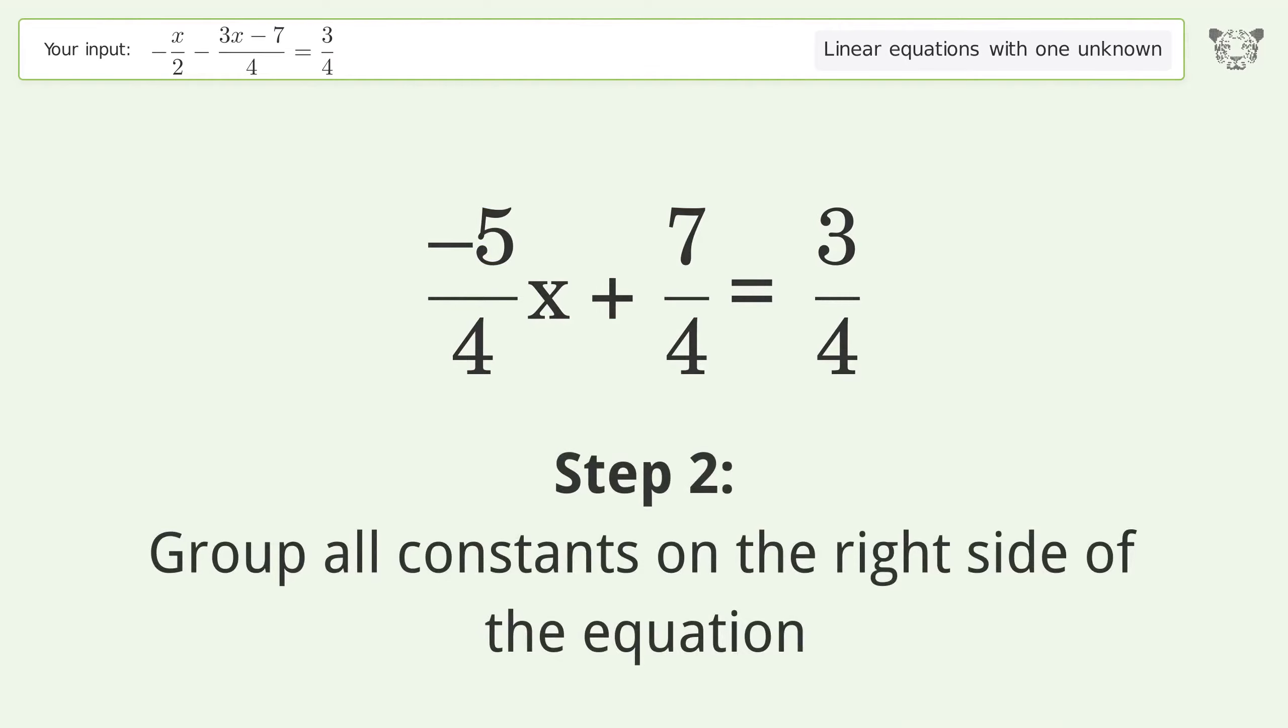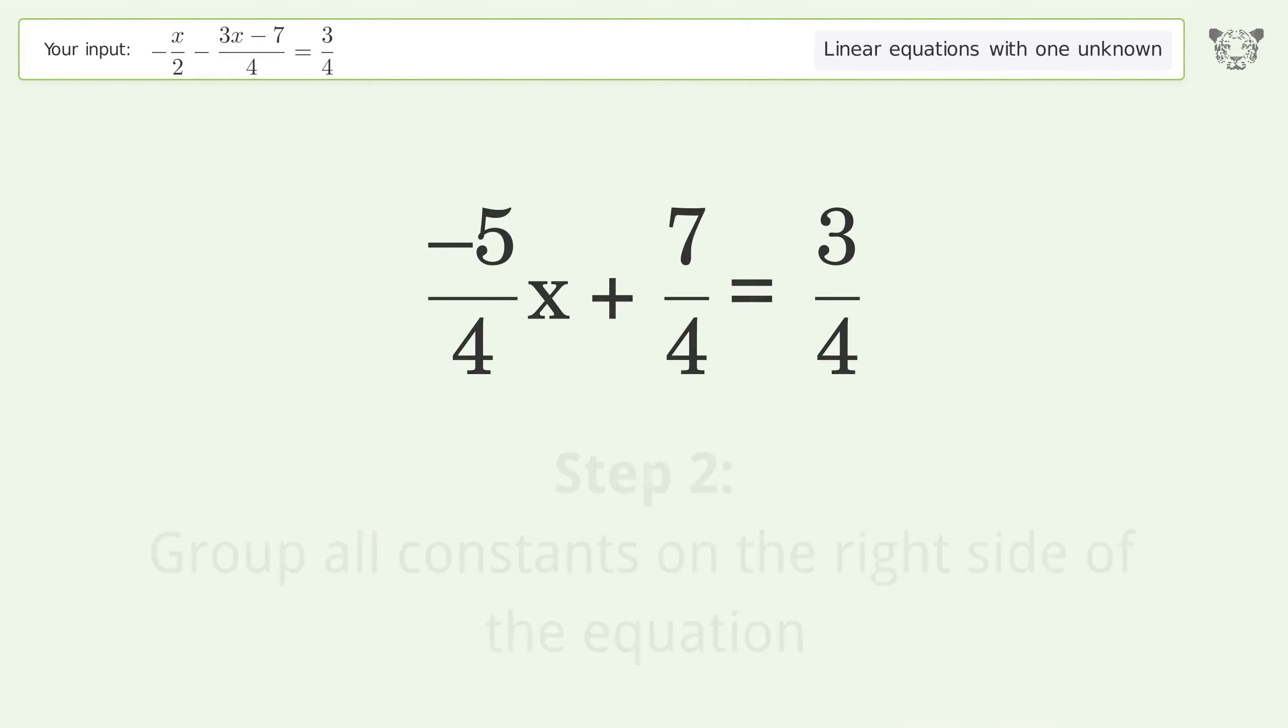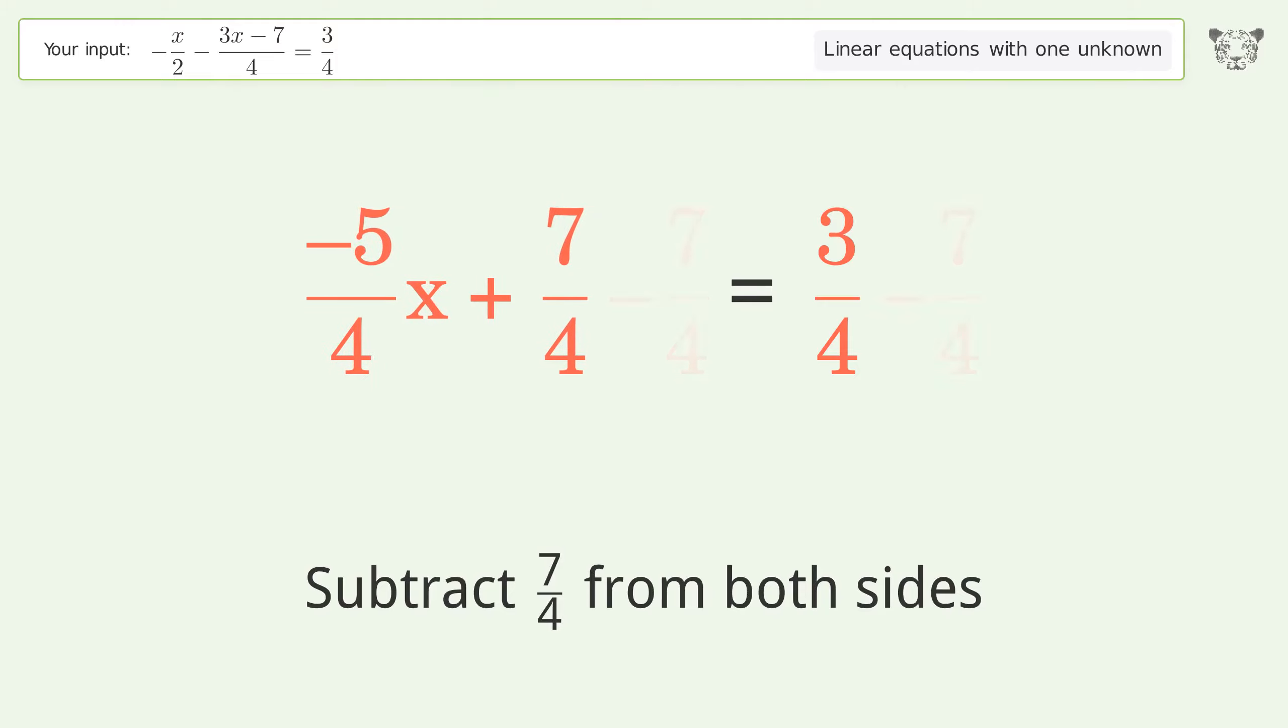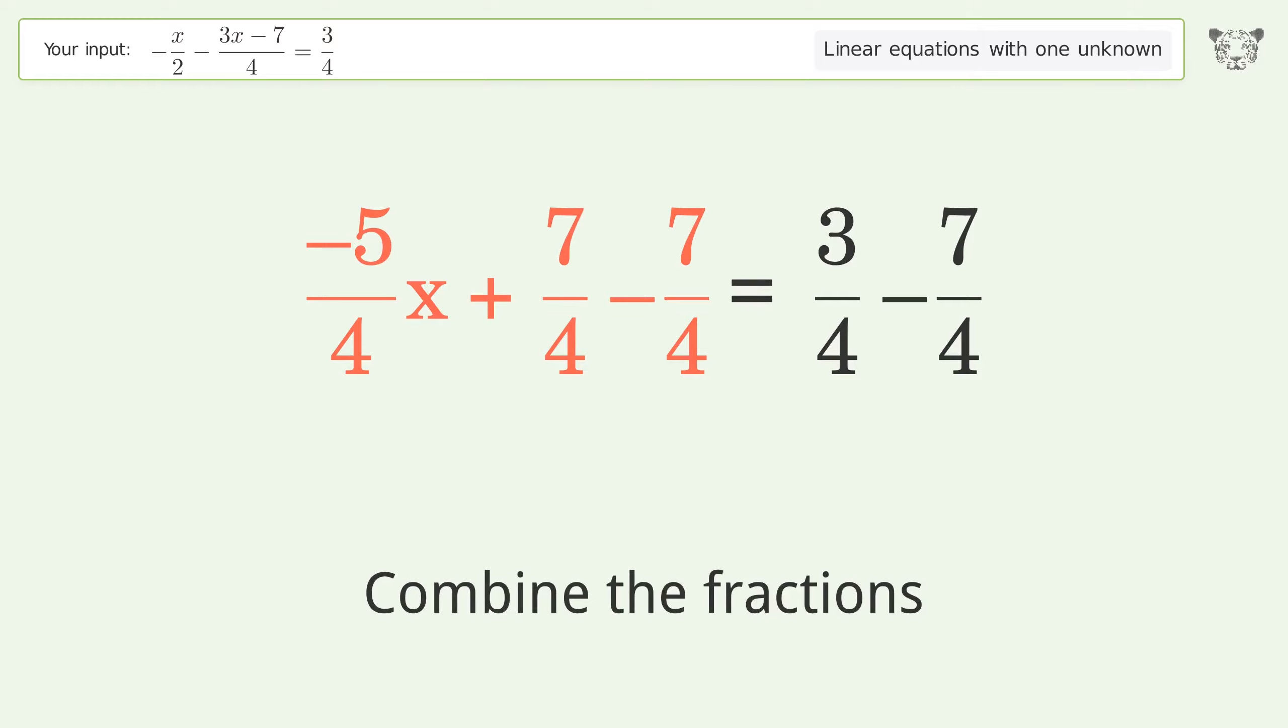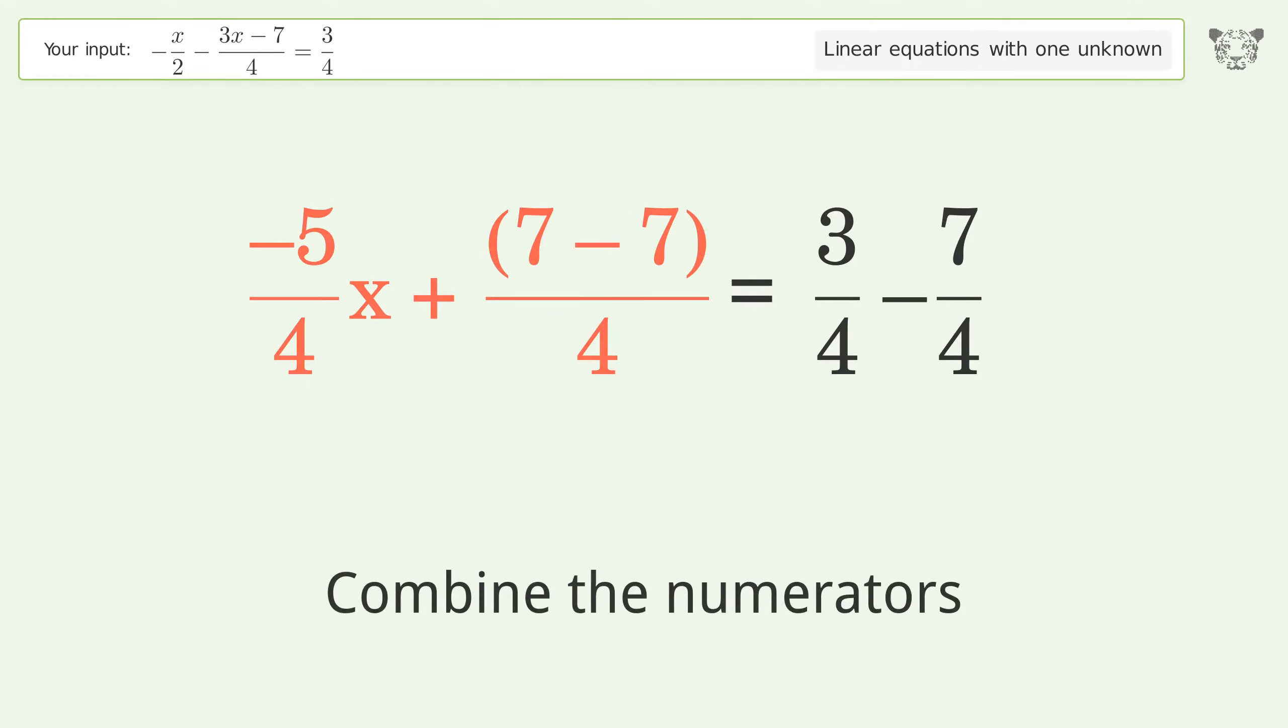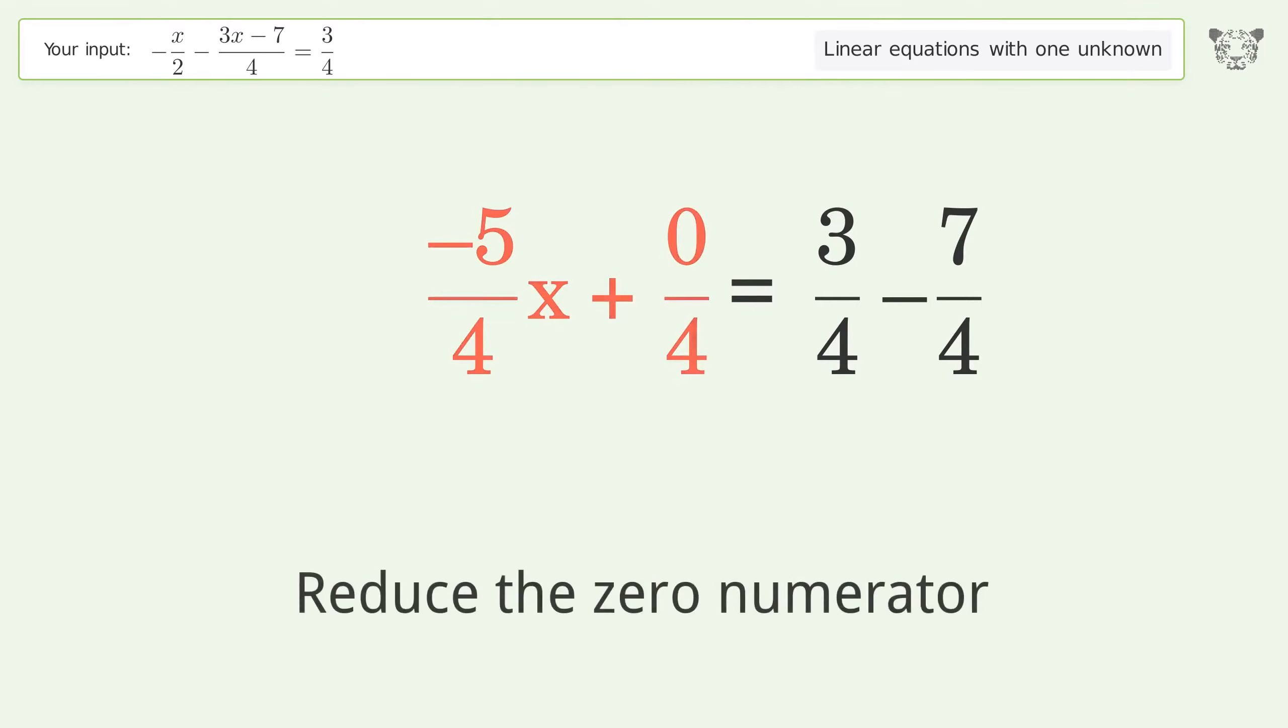Group all constants on the right side of the equation. Subtract 7 over 4 from both sides. Combine the fractions. Combine the numerators. Reduce the zero numerator.